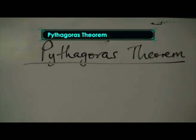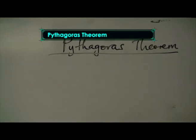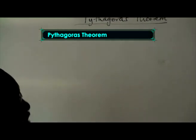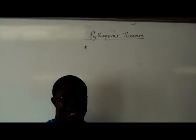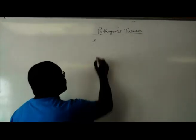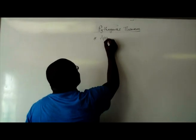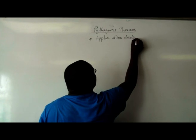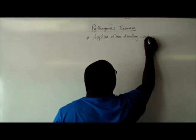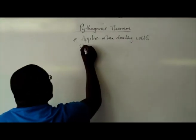Today we're going to be talking about the Pythagoras Theorem. The first and foremost thing that you need to know is that this theorem only applies for right angled triangles. So it applies when dealing with right angled triangles.